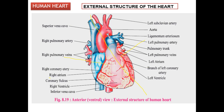The four chambers are: the first chamber is the right atrium — the blue colored part is the right atrium. Below it is the right ventricle. On the left side, there is the left atrium and left ventricle.